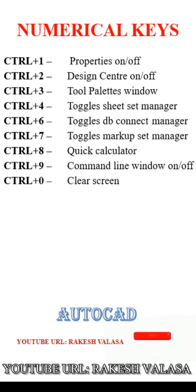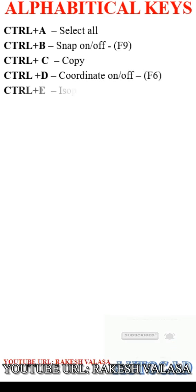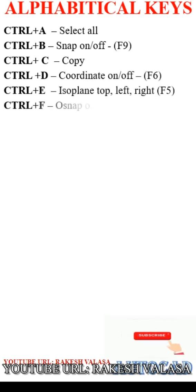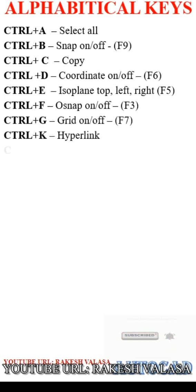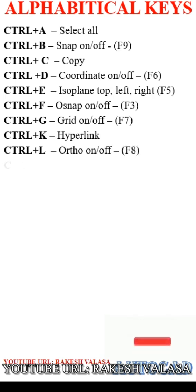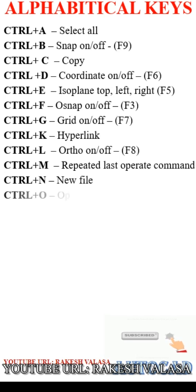Third one: alphabetical keys. Ctrl+A select all, Ctrl+B snap on/off, Ctrl+C copy, Ctrl+D coordinate on/off, Ctrl+E isoplane top left right, Ctrl+F O-snap on/off, Ctrl+G grid on/off, Ctrl+K hyperlink, Ctrl+L ortho on/off, Ctrl+M repeat last command, Ctrl+N new file.